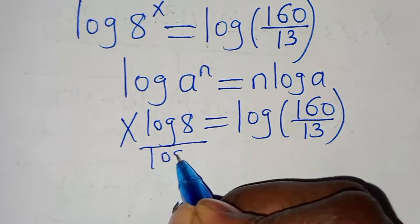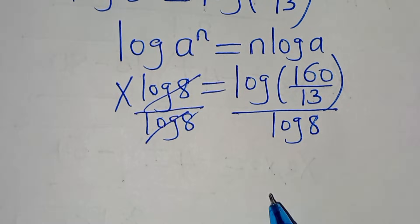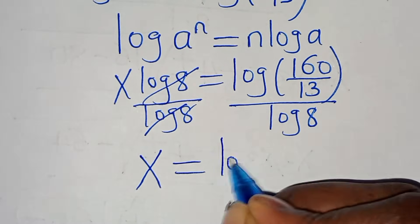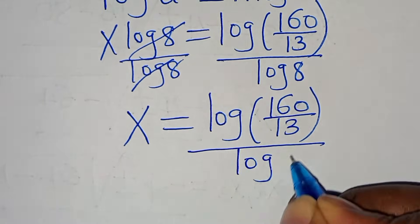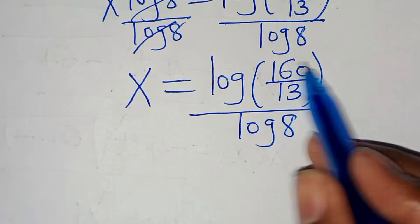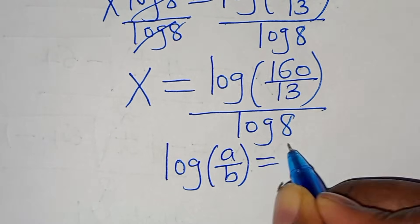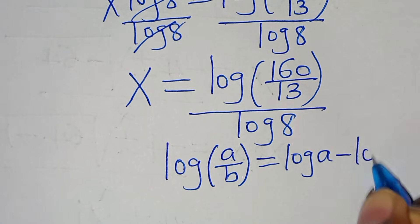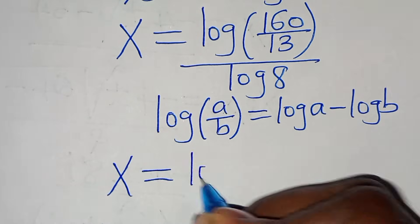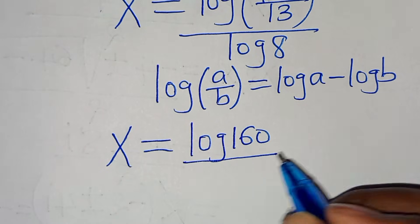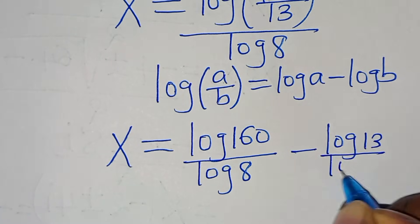Dividing both sides by log(8), we get x = log(160/13) divided by log(8). Using the quotient rule for logarithms, log(160/13) = log(160) minus log(13), so x equals log(160)/log(8) minus log(13)/log(8).